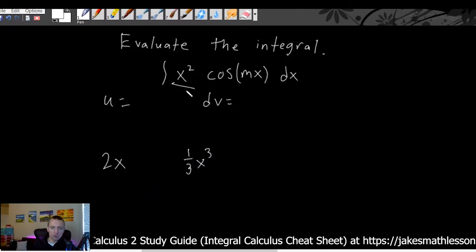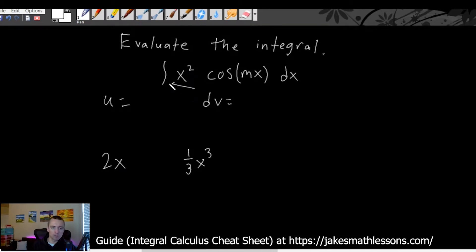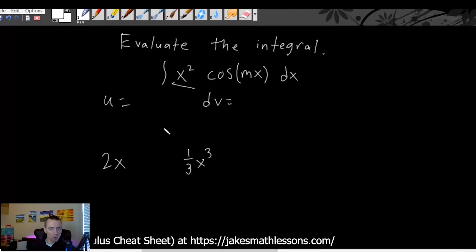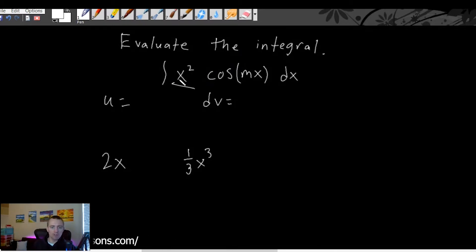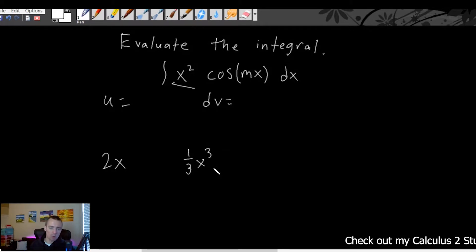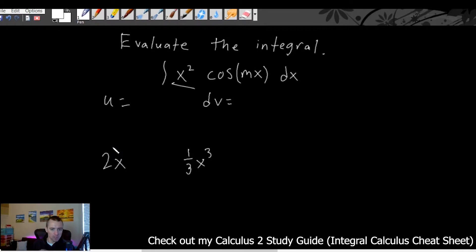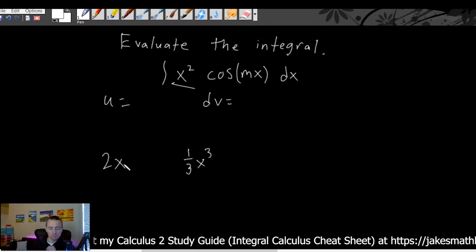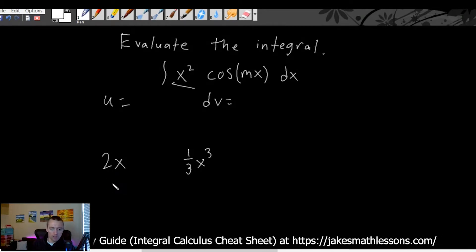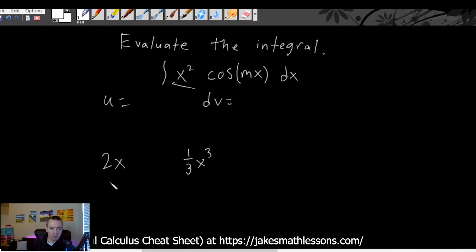If you have a polynomial as one of your possible options for u versus dv, taking the derivative means lowering the power. Each time we lower the power, eventually we'll get to a constant. If we take the derivative of 2x, that's just two — we get to a constant. So if you have a power function, you usually want to make it your u, because you want to lower your power and get to a point where your function is easier to deal with.